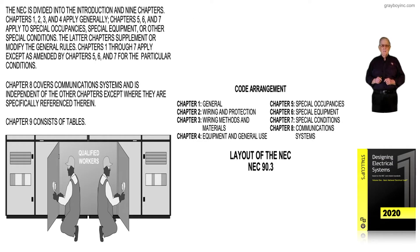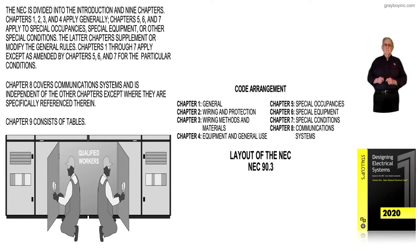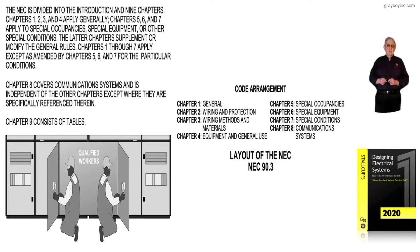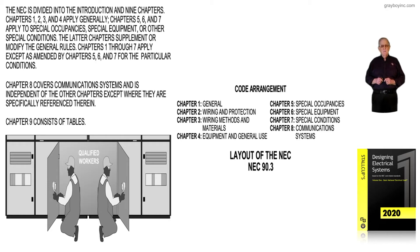This illustration deals with the layout of the NEC in accordance with NEC 90.3. Notice that the NEC is divided into the introduction, including nine chapters. Chapters 1, 2, 3, and 4 apply generally. Chapters 5, 6, and 7 apply to special occupancies, special equipment, and other special type conditions.